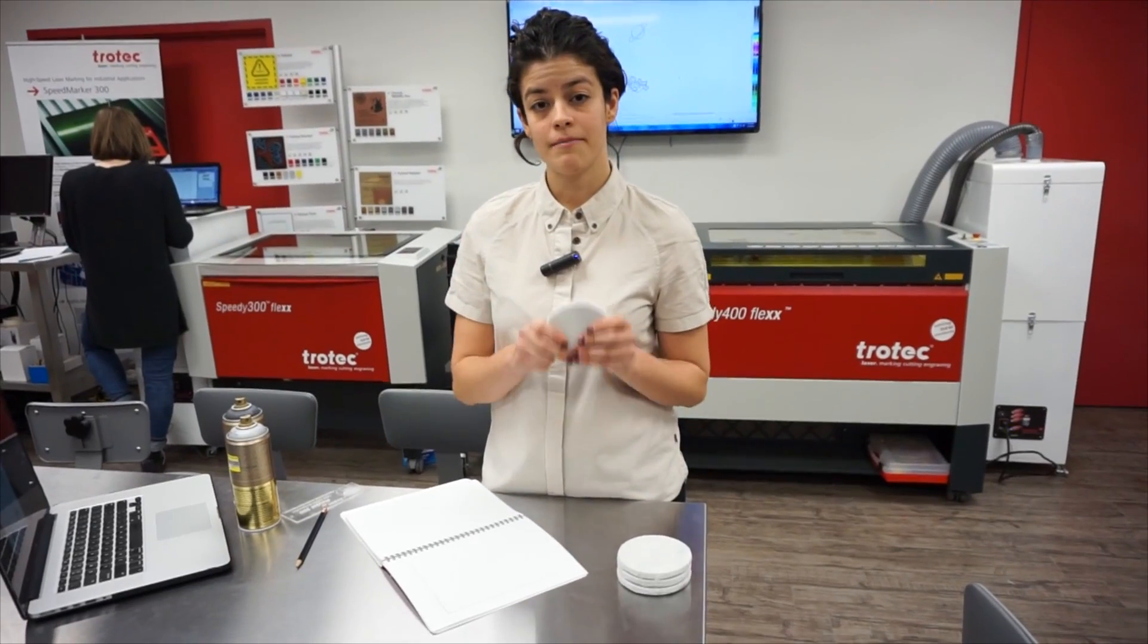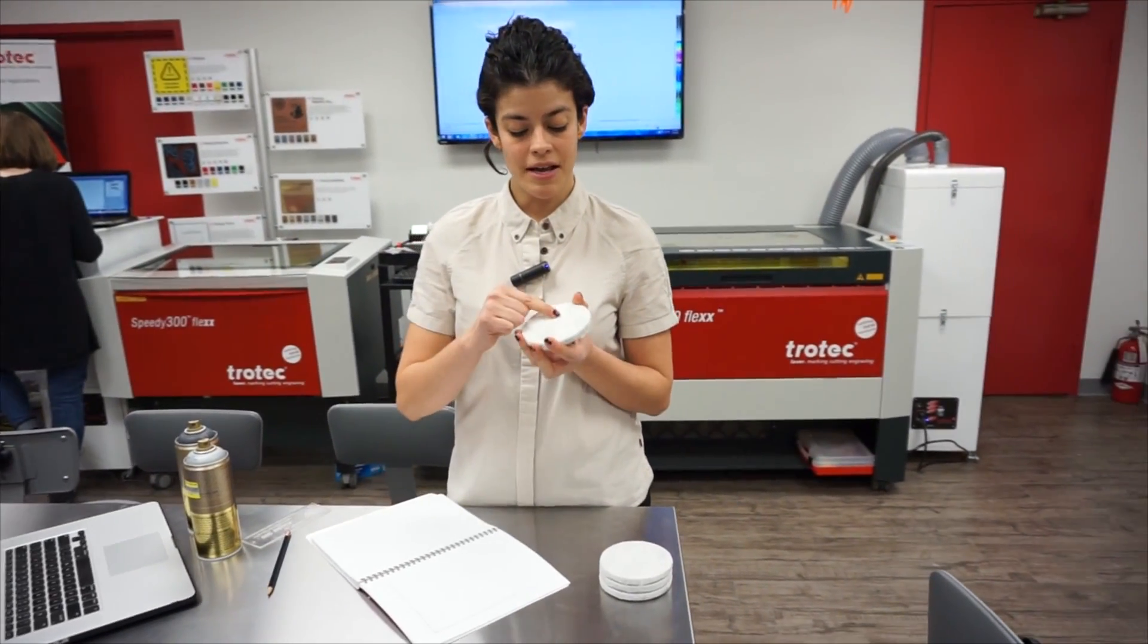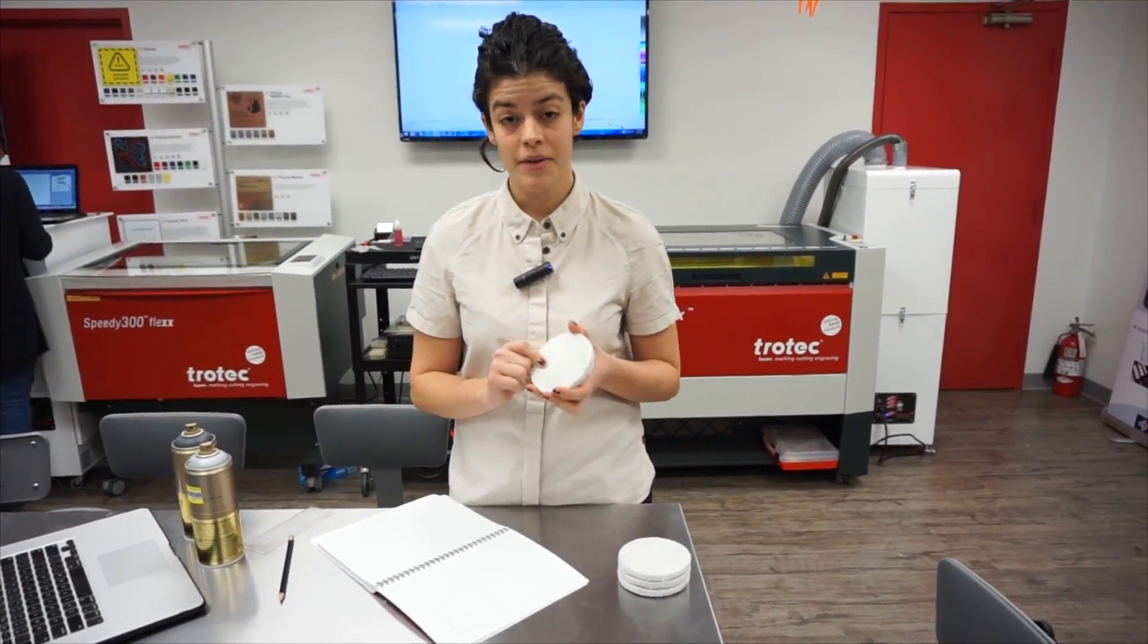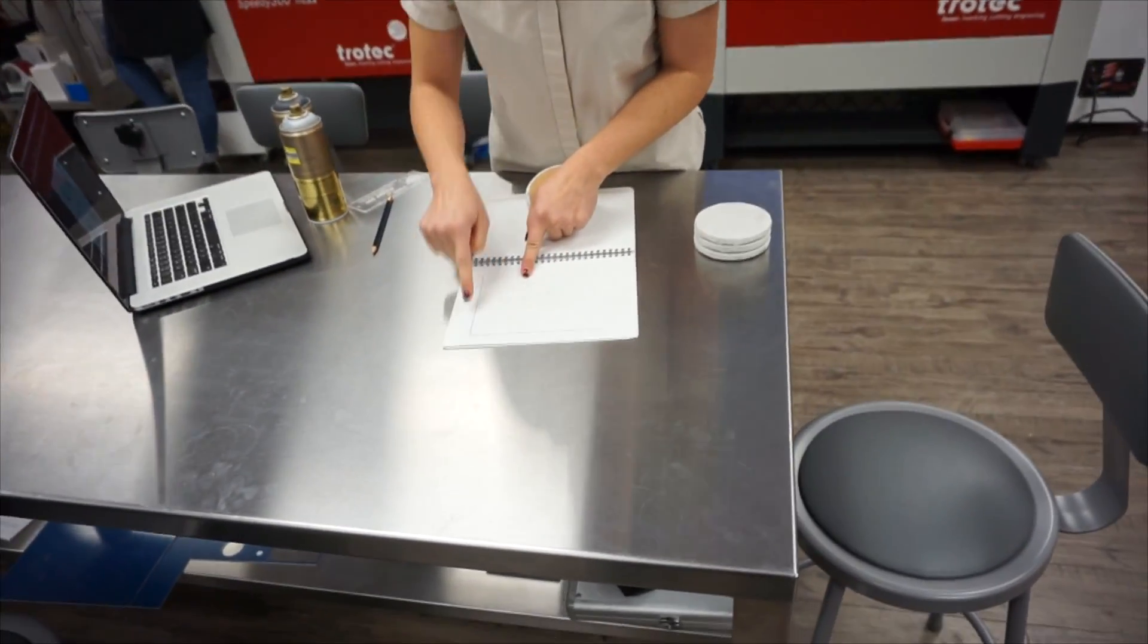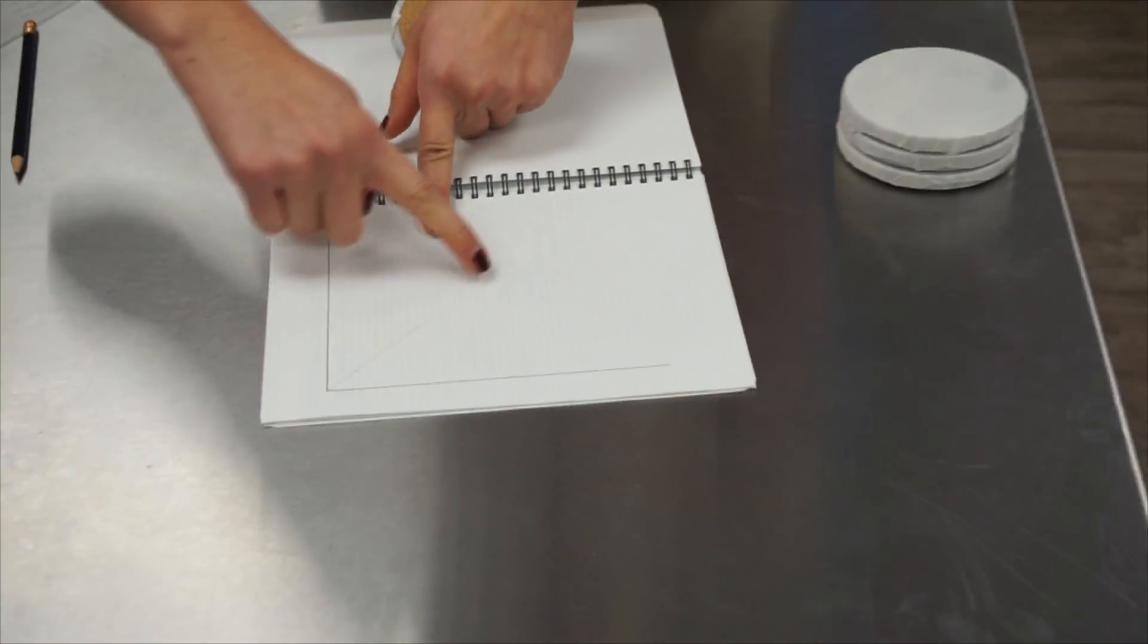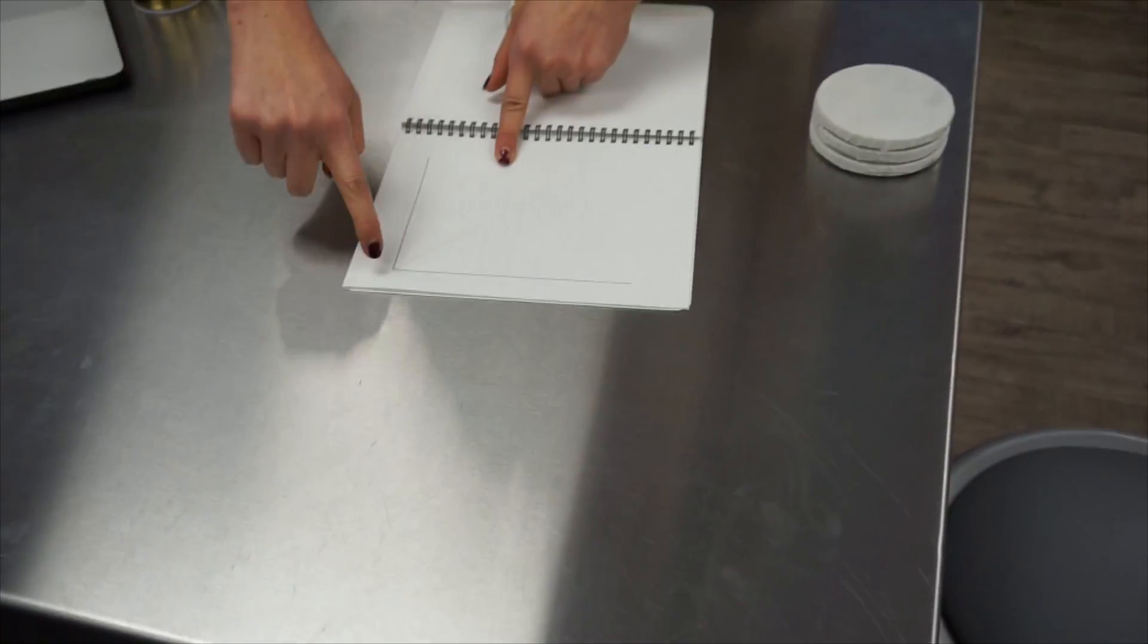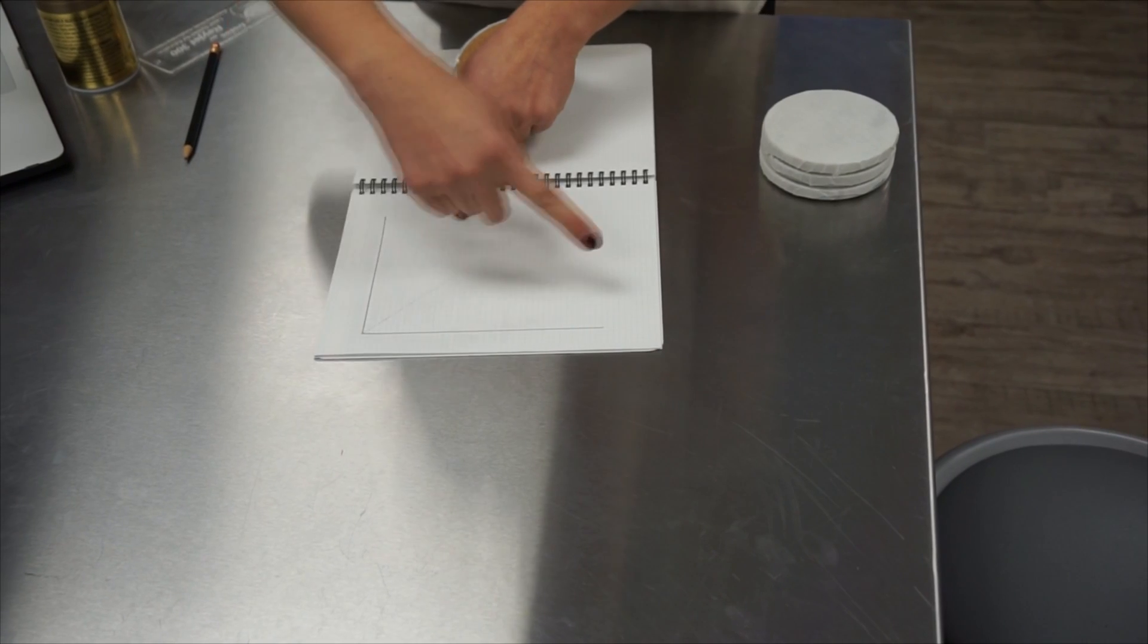Once your coasters are covered in masking tape, you want to find and mark the center of each coaster. A trick to doing this is to mark a right angle on a piece of paper and draw a line down 45 degrees, so right down the middle of your right angle.